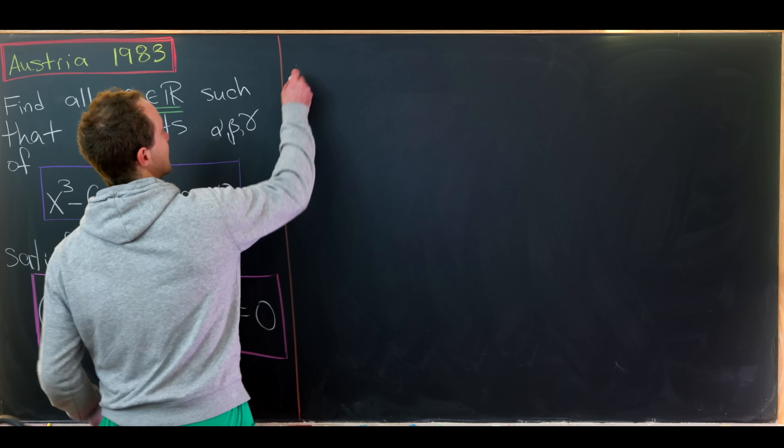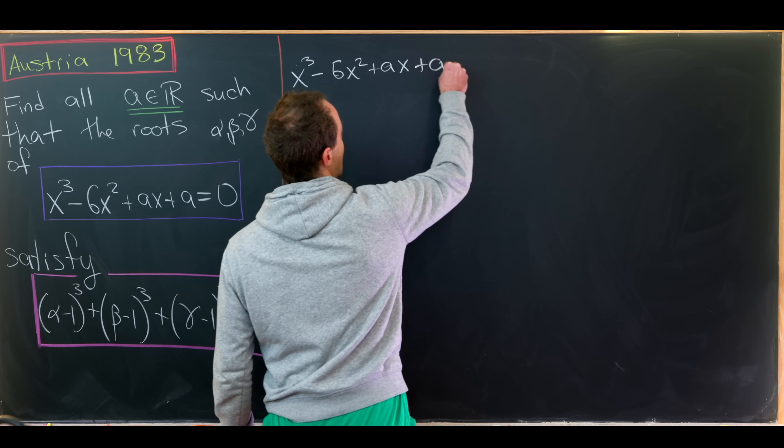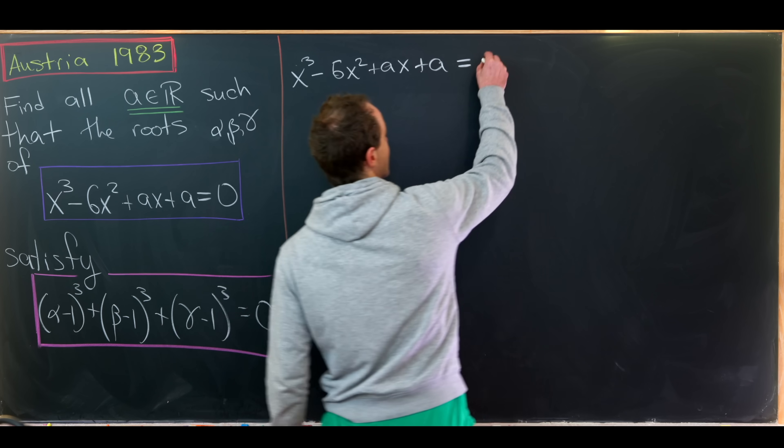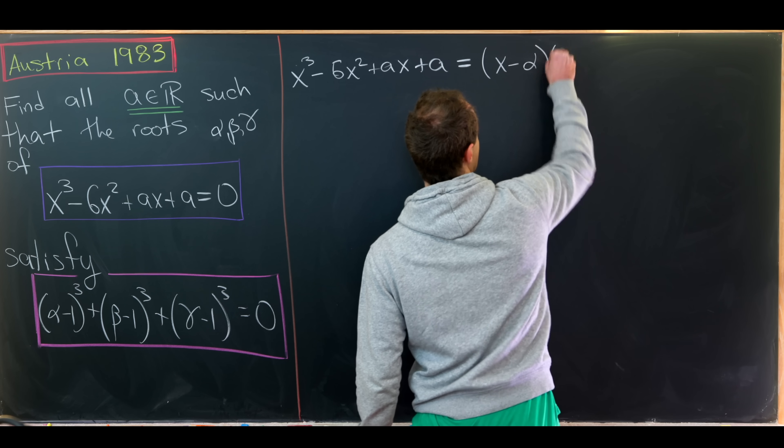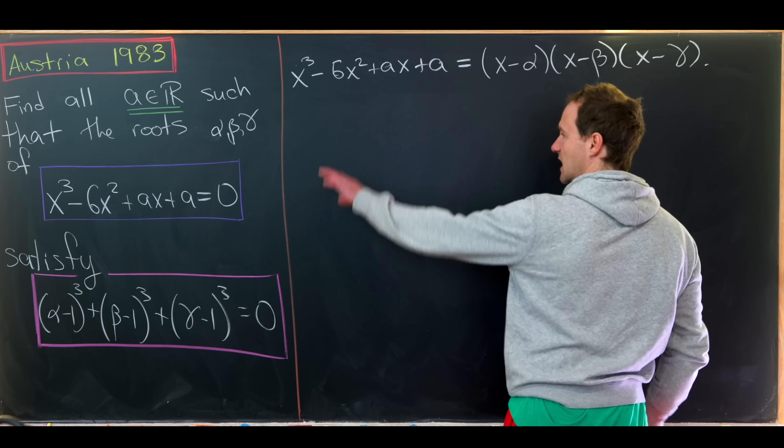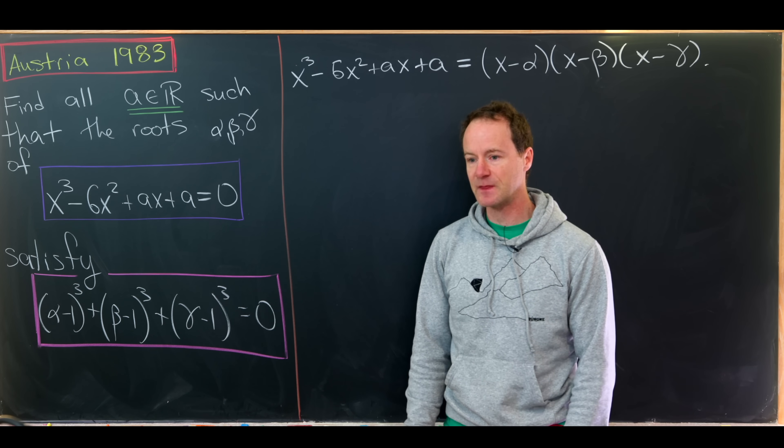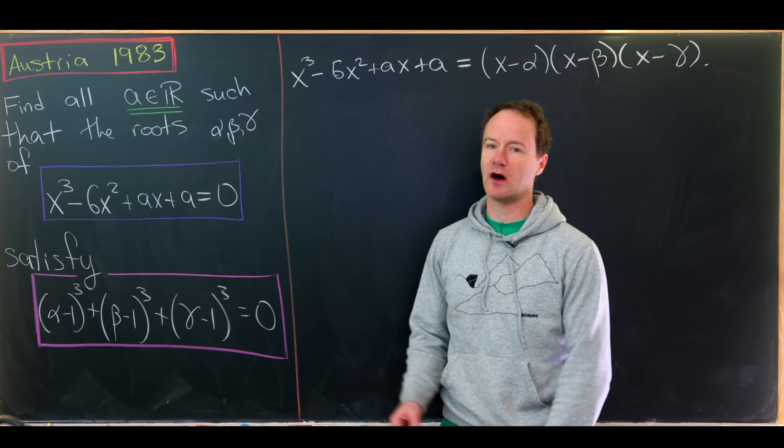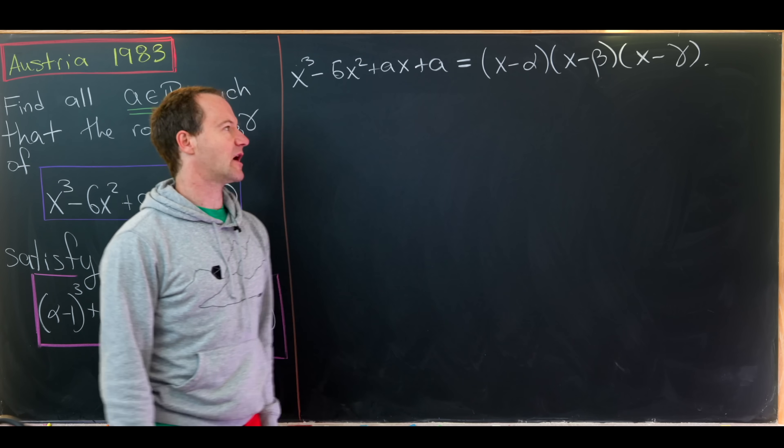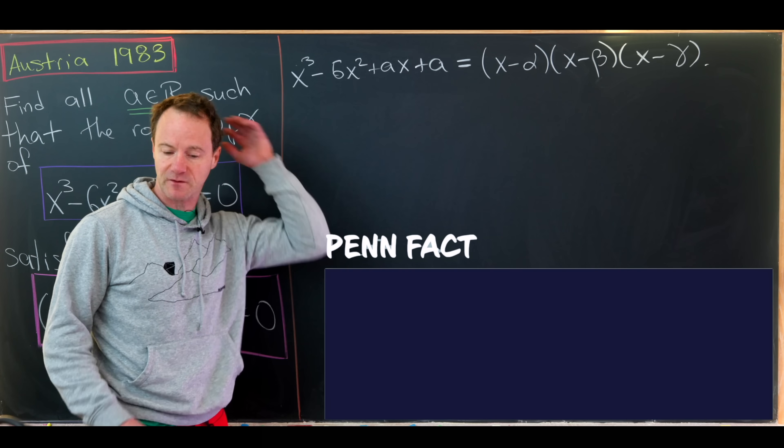First off, I'll take my cubic, x cubed minus 6x squared plus ax plus a, and I'll factor it using the fact that we know the roots are alpha, beta, and gamma. So this factors as x minus alpha times x minus beta times x minus gamma. It's not said here, but alpha, beta, and gamma can be complex roots if necessary, and in fact, for our final polynomial, they will necessarily be complex numbers. Now we'll multiply out this right-hand side and then compare coefficients. You could also do this very quickly with Vieta's formula, but let's do it from scratch.